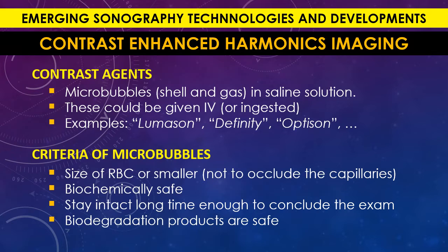The contrast medium in ultrasound is made of saline solution with microbubbles. Each microbubble is formed of a shell with some gas inside. This microbubble solution is given IV — they shake it first and then administer it IV — to visualize the cardiovascular system or cardiac chambers. Sometimes it is ingested or swallowed to visualize the stomach or part of the GI tract. There are many such solutions on the market, but all must meet the same criteria.